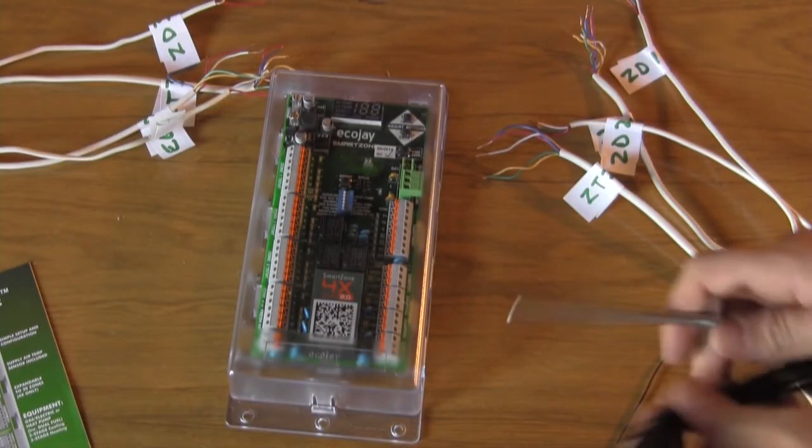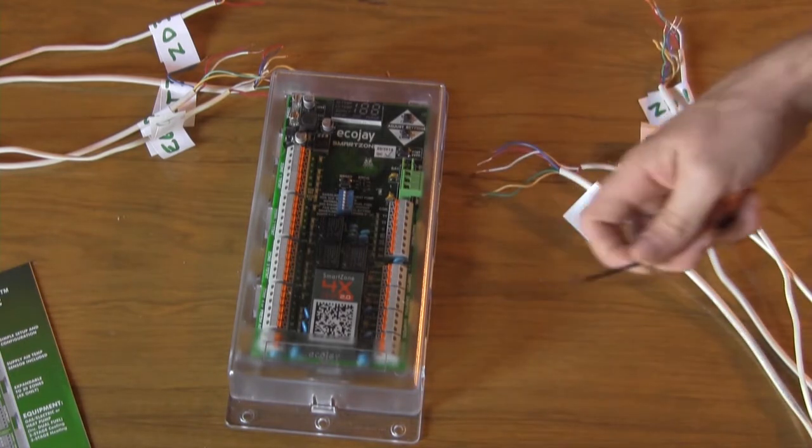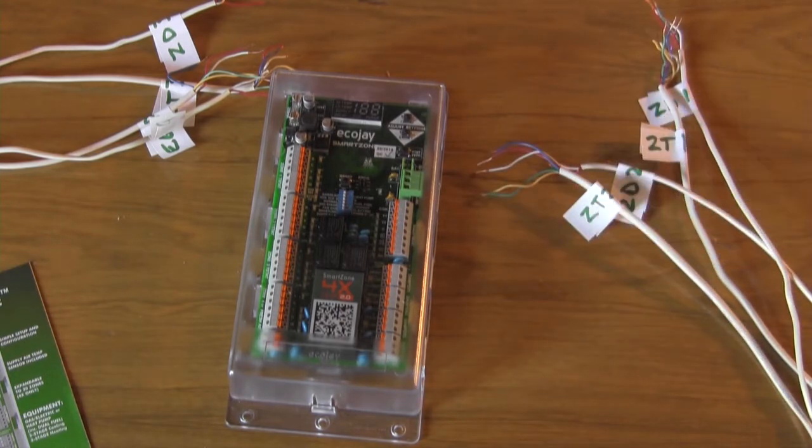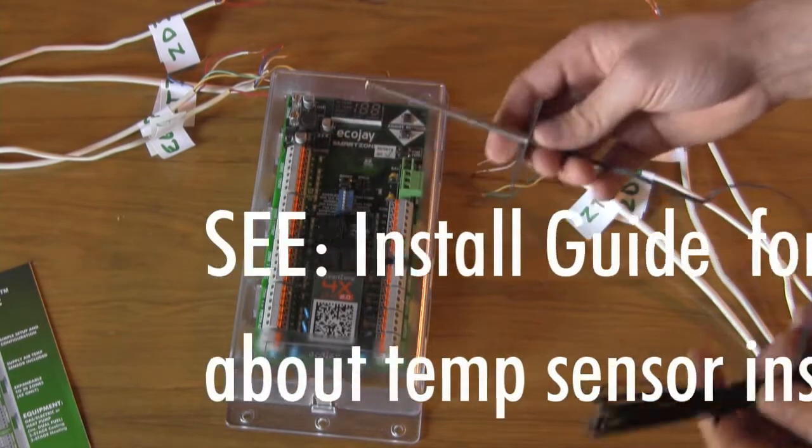First, you may want to follow the wire that the Honeywell temperature sensor was connected to and find out where the sensor is connected in the plenum and replace that sensor with the sensor that came with the SmartZone board.